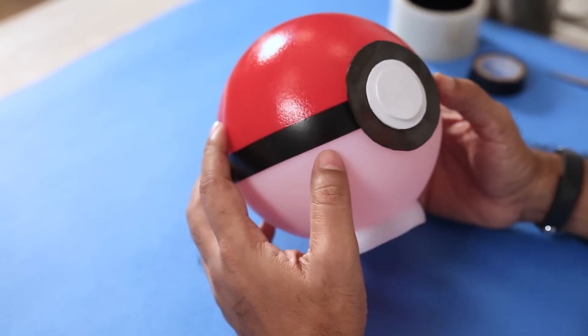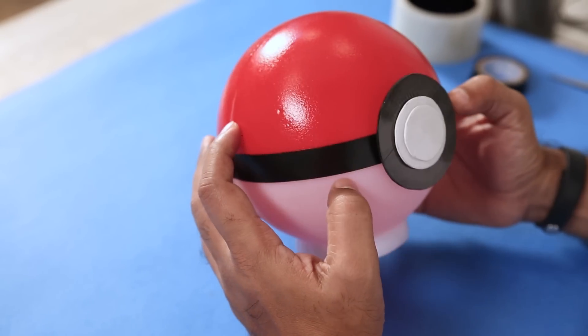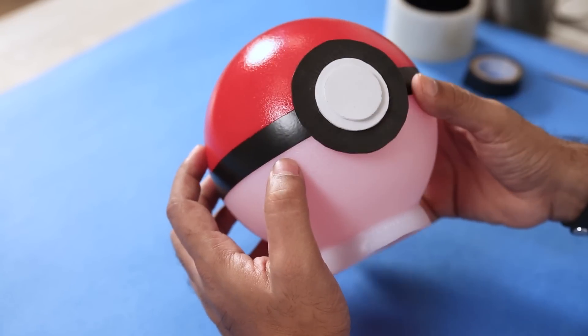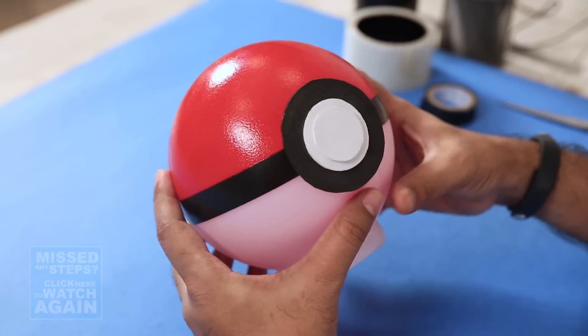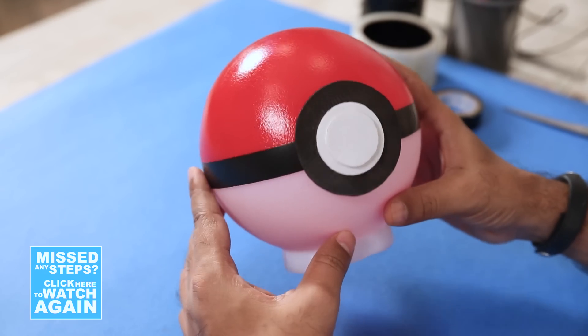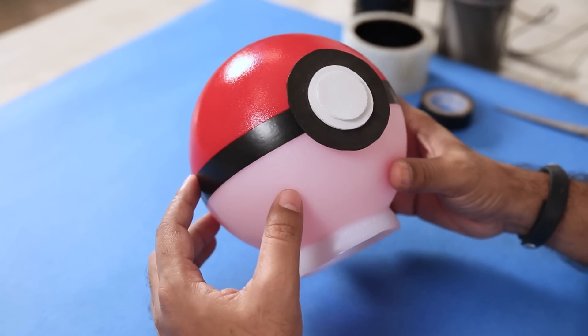Look at that. I'm actually very impressed with the way it turned out. Looks like an actual pokeball. Something that you would buy from a store. Nice. Now all you need is a lamp base. And then you can convert this into a pokeball night light. Let's try that out.